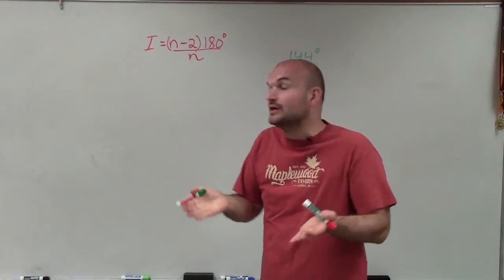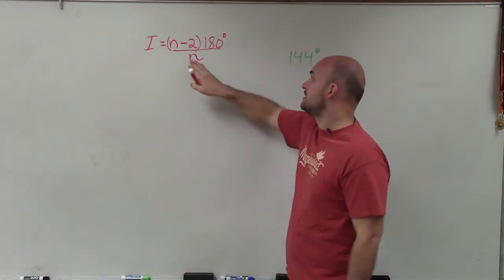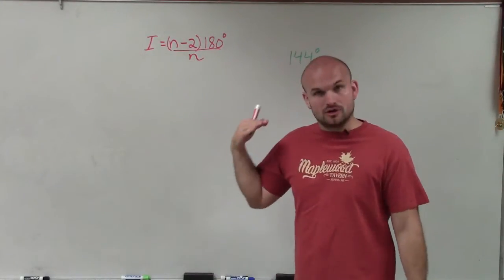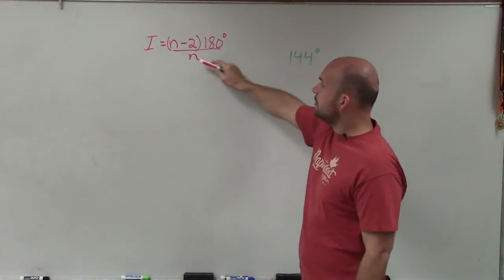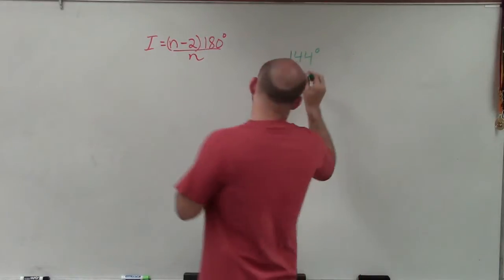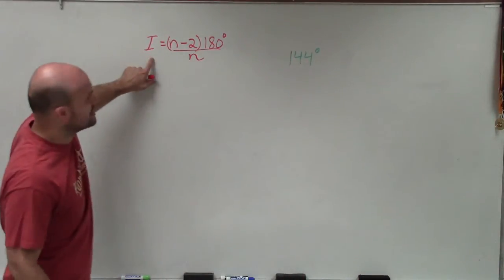Remember, this has to be regular polygons that we're dealing with, because all the interior angles are going to be the same, as well as the measure of the sides are all going to be congruent. n represents the number of sides, and that's what we need to figure out. The only thing we know is the measure of the interior angle, which is i.